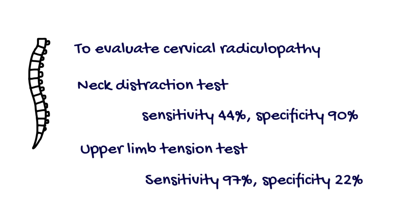In this example, our first go-to test might be the neck distraction test, because the specificity is 90%. If the test is positive, we can rule in the condition. In other words, if a person has a positive neck distraction test, we can be confident this person has cervical radiculopathy. However, the sensitivity of the test is very low. If the result is negative, we cannot be confident the person does not have cervical radiculopathy — the person still may or may not have the condition. If this is the case, we can apply another test, the upper limb tension test. If we conduct this test and the result is negative, we can be confident the person does not have cervical radiculopathy, because the sensitivity of the upper limb tension test is high.